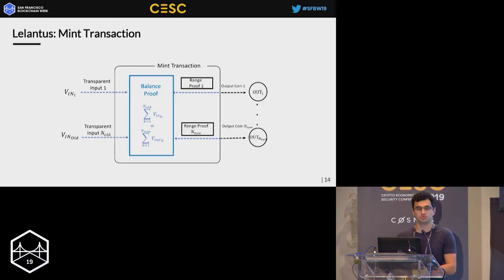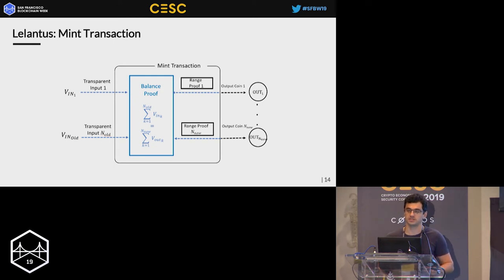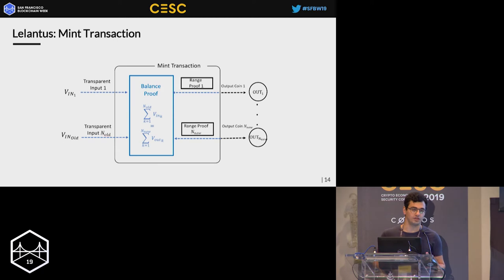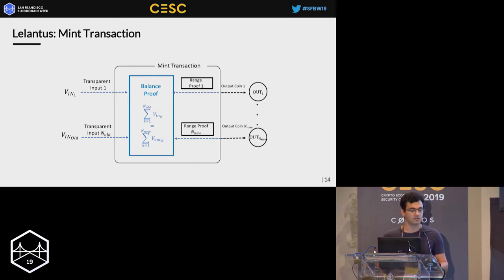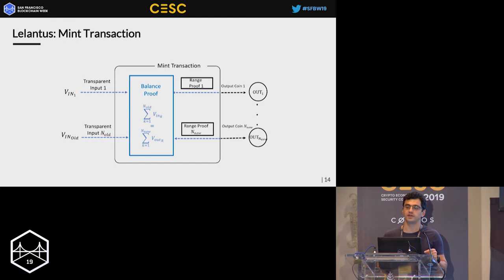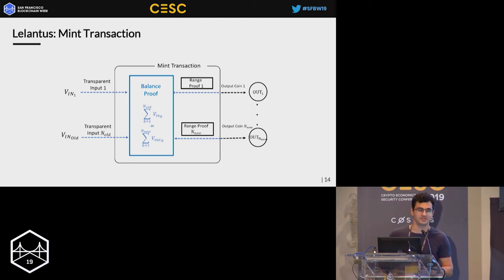Lelantus supports two types of transactions. The first, mint transactions, enables transferring base layer currency to shielded coins of arbitrary values, providing a proof that the sum of output coins equals the minted input amount, and that no coin contains a negative value. To prove this, we also modify the bulletproof range proof protocol to support double-blinded commitments.